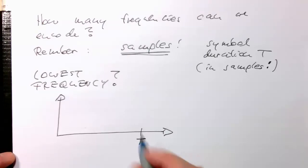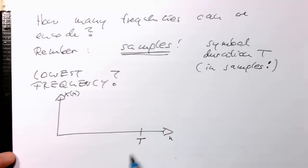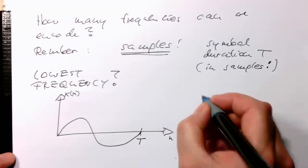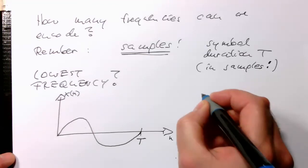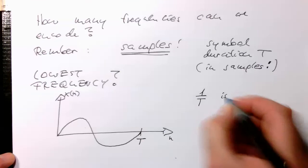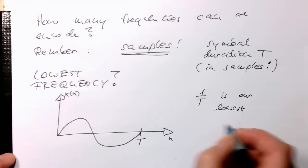Remember, these are still samples here. So we have n, and this is our x of n. Obviously, the lowest frequency is just that we are able to put in one sine wave. That's essentially 1 over t, our lowest frequency.